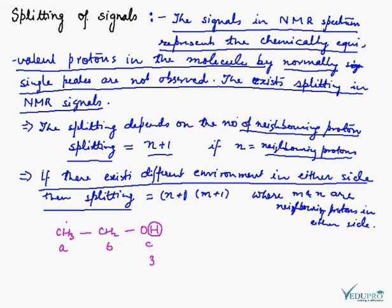Here is the B proton — the CH2 group. If we look at one side, there are 3 protons and on the other side there is 1 proton. So using the formula (n+1)(m+1): 3 plus 1 is 4, and 1 plus 1 is 2, giving 4 into 2 equals 8 peaks. Here is the CH3 group — the A type proton. Its neighboring proton is CH2, so the splitting is 2 plus 1 equals 3.